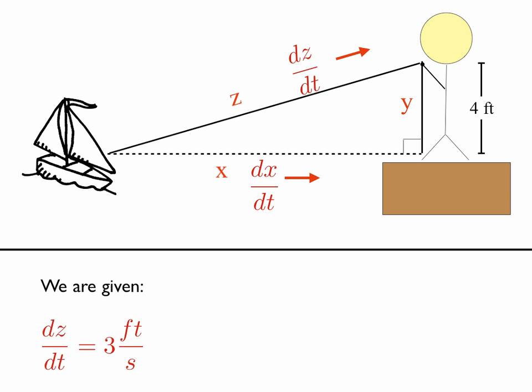And so we're given in the problem that dz/dt, or the change in z with respect to time, is 3 feet per second. And in this problem, we must find dx/dt when x is equal to 30 feet. So when we solve the problem, we want to see the change in the x direction. That is, how fast is the boat heading towards the dock at the instant the boat is exactly 30 feet away from the dock.